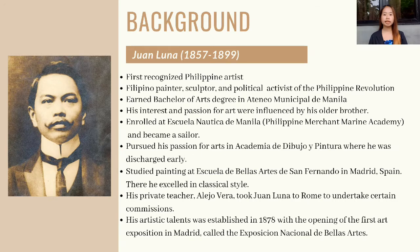One of his private teachers, Alejo Vera, a famous contemporary painter in Spain, took Juan to Rome to undertake 13 commissions. His artistic talents were established in 1878 with the opening of the first art exposition in Madrid, called the Exposición Nacional de Bellas Artes, or the National Demonstration of Beautiful Arts. From then on, Luna became engrossed in painting and produced a collection of paintings exhibited in the 1881 exposition.